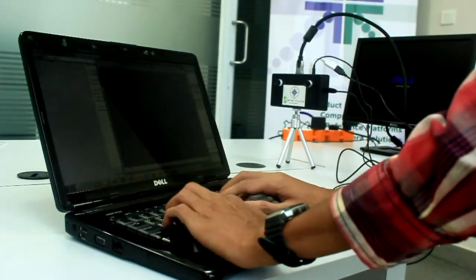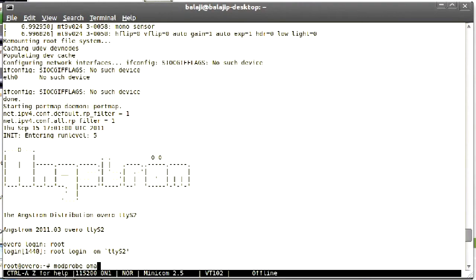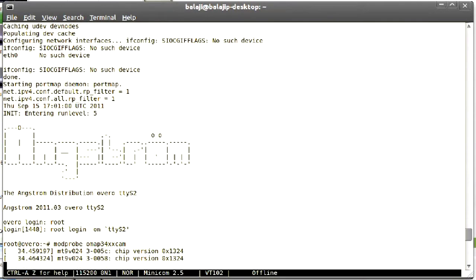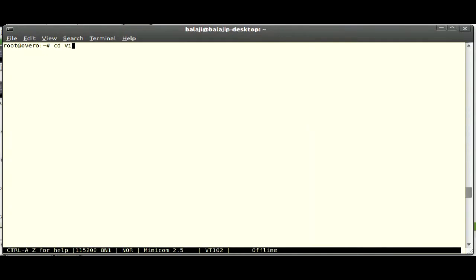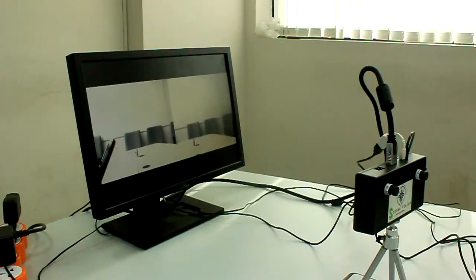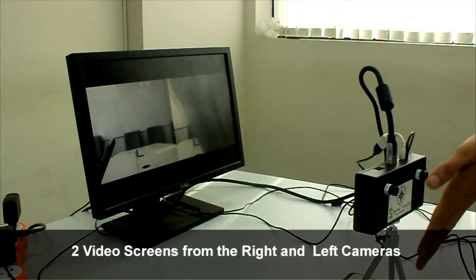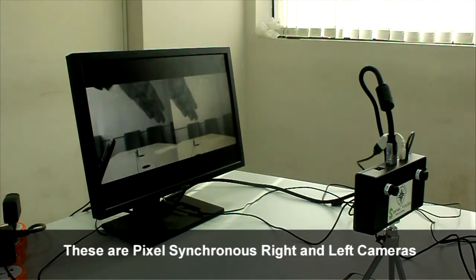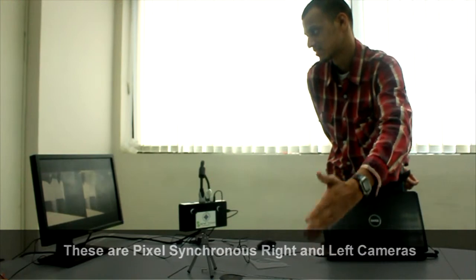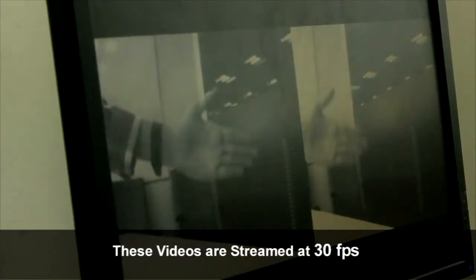Now I am going to launch a sample application. You can now see the two video screens from the left and right cameras. These are the pixel synchronous right and left cameras. These videos are streamed at 30 fps.